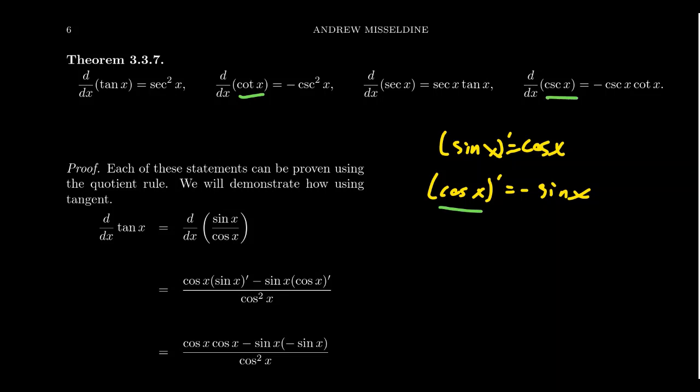The 'co' is short for complementary, like complementary angles. These trigonometric functions come in complementary pairs: secant and cosecant are complements of each other, tangent and cotangent are complements of each other, and likewise sine and cosine are complements of each other. If you compare the derivative of the trigonometric function without the co and then consider the derivative of the function with the co, you'll notice a very common pattern.